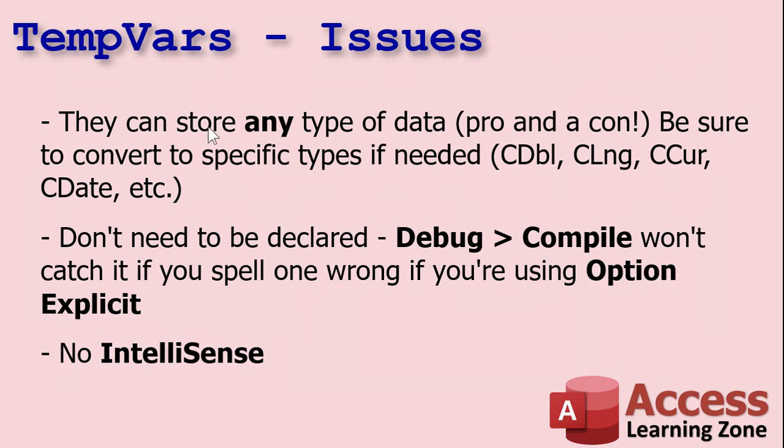TempVars does have some issues. They can store any type of data — that's a pro, but it's also a con. You could store a value like 65 in a TempVar thinking it's a number, but it's actually being stored as text because you didn't control how it was saved. So wherever you use it, if you're going to add to it or do calculations, you have to use the correct type conversion function. If you're expecting a currency value use CCur(), if you're expecting a date use CDate() — just keep that in mind.